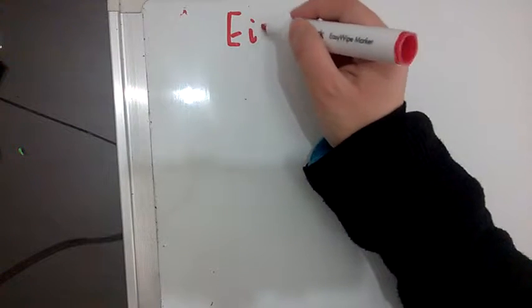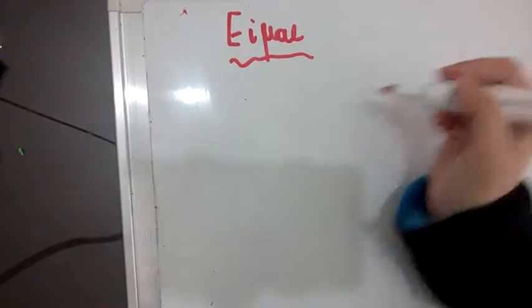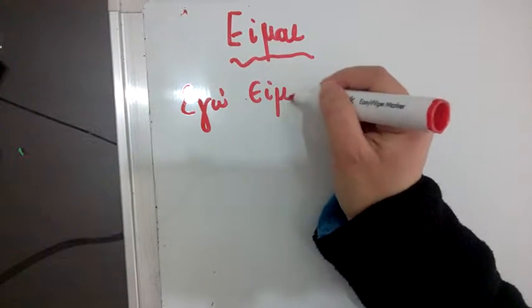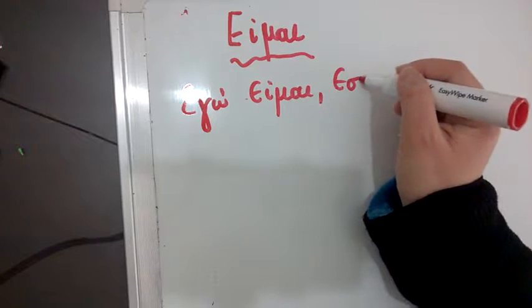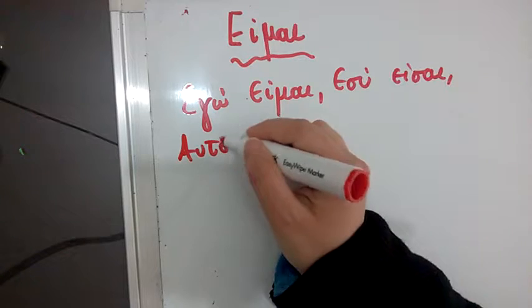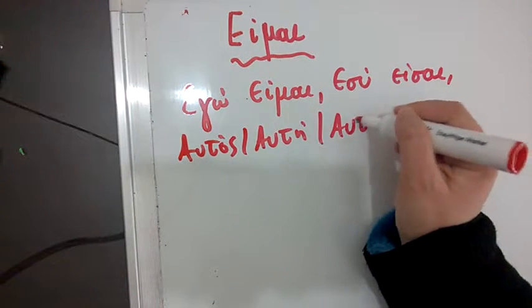We write the verb, which is είμαι, and I write it down only in Greek this time. Εγώ είμαι, εσύ είσαι, αυτός, αυτή, αυτό είναι.